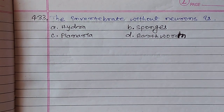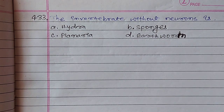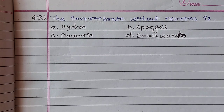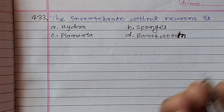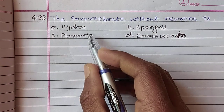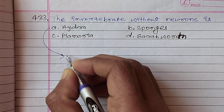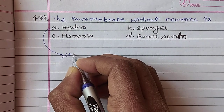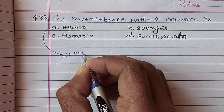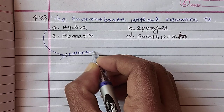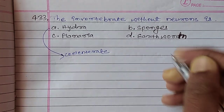Press number 4 from 33. The invertebrate without neurons. Option A is Hydra — that is a Coelenterate. This is a Coelenterate.